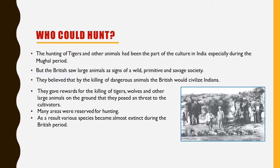Many areas were reserved for hunting. As a result, various species became almost extinct during the British period. A British administrator, George Yule, killed 100 tigers. Only much later did environmentalists and conservationists begin to argue that all these species of animals needed to be protected and not killed.